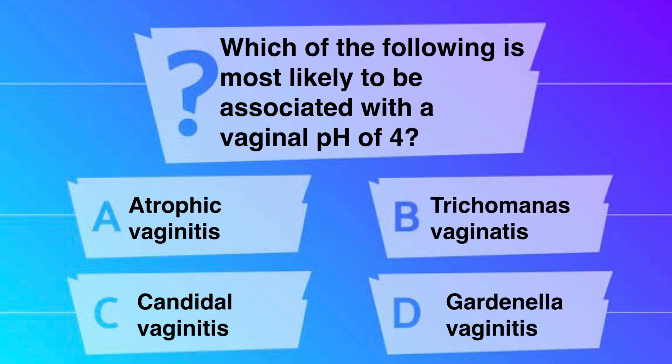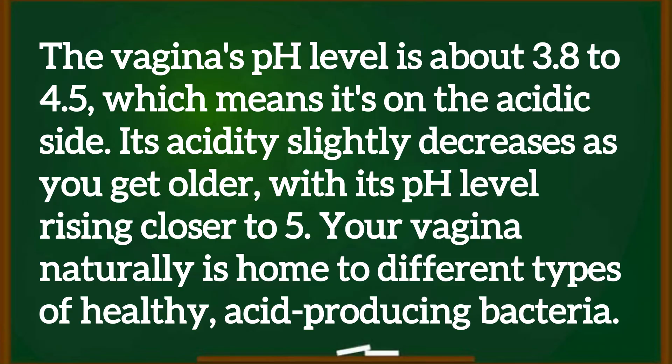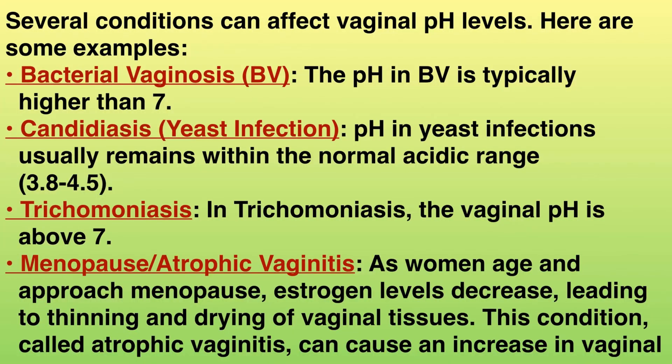The correct answer is option A, atrophic vaginitis. The vagina's pH level is about 3.8 to 4.5, which means it's on the acidic side. Its acidity slightly decreases as you get older, with the pH level rising closer to 5. Your vagina naturally is home to different types of healthy acid-producing bacteria. Several conditions can affect vaginal pH levels.